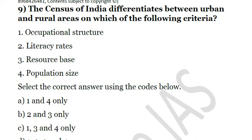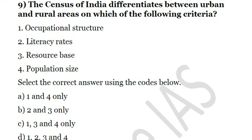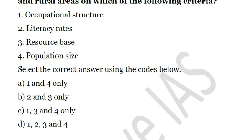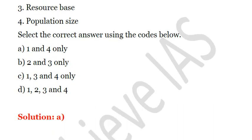For example, if 75% of the males are engaged in non-agricultural activities, and if a particular area has more than 5,000 population, then it is considered urban. So the answer includes only occupational structure and population size — solution is A.